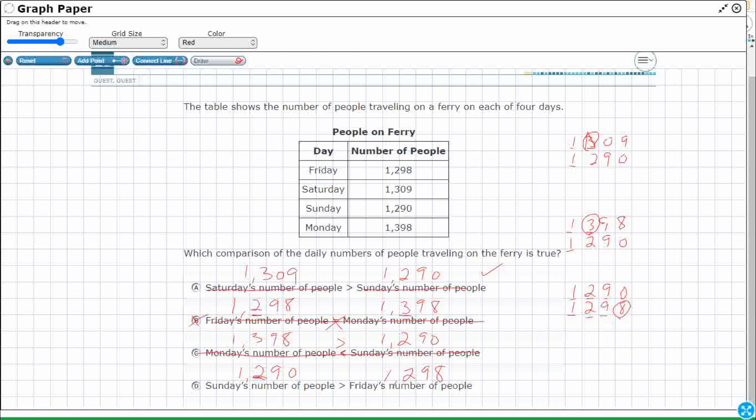So unfortunately this is going to be incorrect. I need a less than symbol because read left to right 1,290 is less than 1,298. The opening obviously always goes to the larger number.